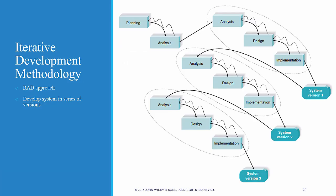This picture represents the process for the first RAD approach — the iterative development methodology — where you go through a quick analysis, design, and implementation cycle to come to the first system version. You see what it can do and what it doesn't do, then set it aside and go through analysis, design, and implementation again to reach version two. You repeat this until you finally evolve into a prototype version.